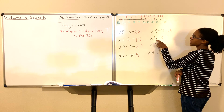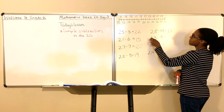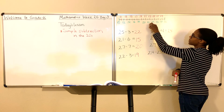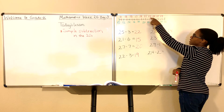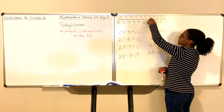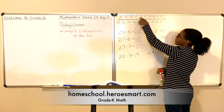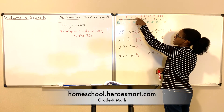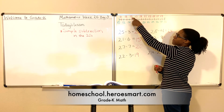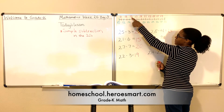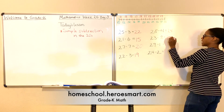23 minus 8. Come up to the number line, find number 23, and now subtract by 8: one, two, three, four, five, six, seven, eight. What is 23 minus 8? 15. Good job — 15.